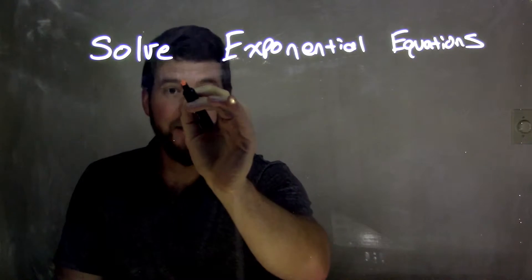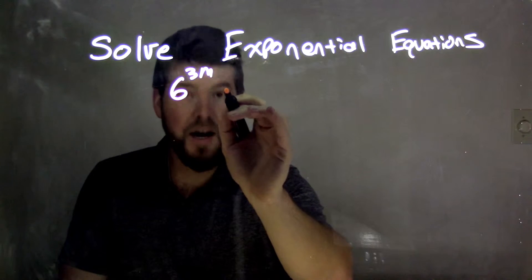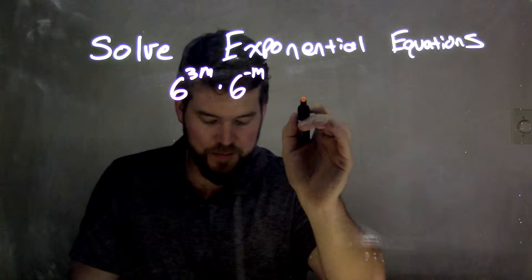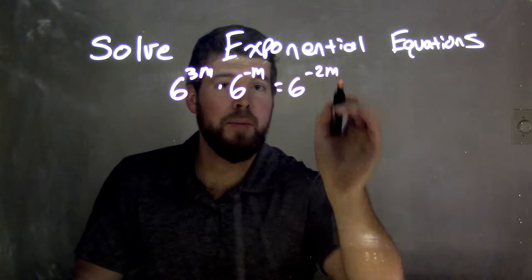Our equation here is 6 to the 3m power times 6 to the negative m power equals 6 to the negative 2m power.